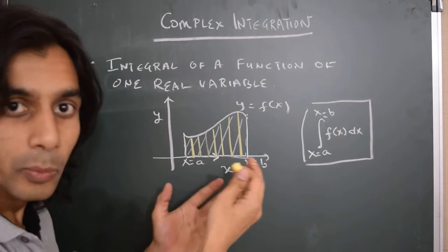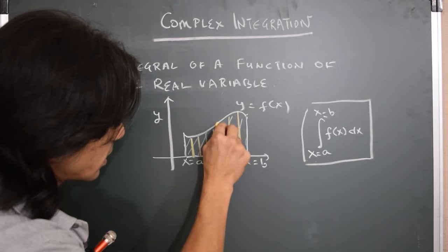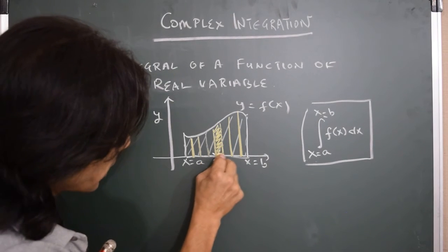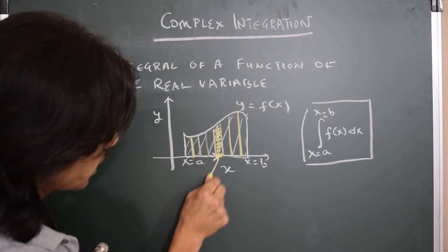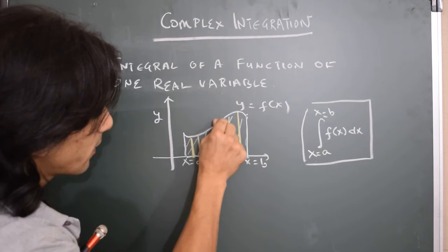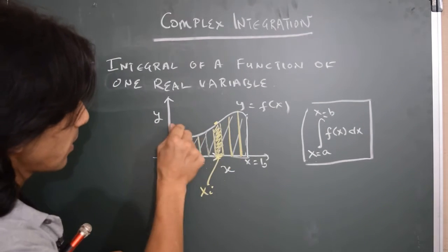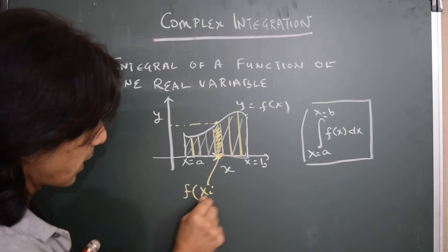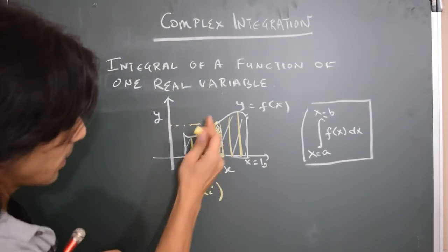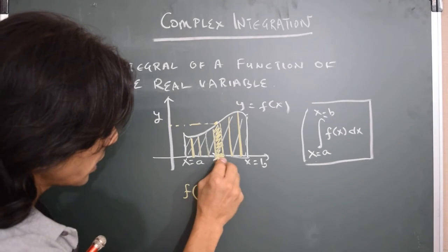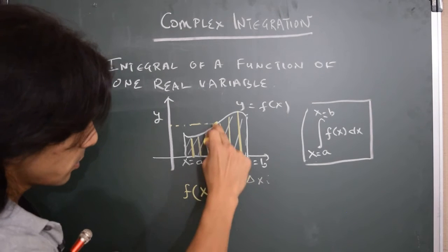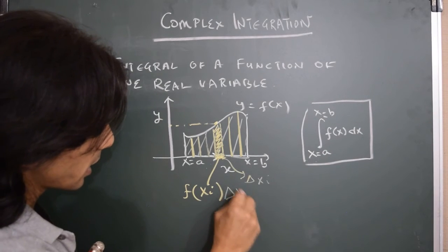We have divided this area with rectangles. Then we pick up some point within a rectangle — let's say we choose the point xi. We evaluate the value of the function at xi, which gives f of xi — that will be the height of the rectangle. The width of this region is delta xi. Then the area of this particular rectangle is f(xi) times delta xi.